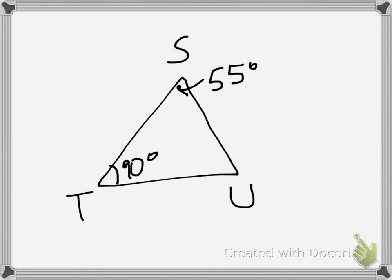And angle U is just going to be 90 plus 55 subtracted from 180, because all three angles have to add up to 180. So if you do 90 plus 55, that's 145. And when you subtract that from 180, you get that angle U is 35 degrees. So if I have a 90 degree angle, a 55 degree angle, and a 35 degree angle, that means that this triangle is a right triangle because of the 90 degree angle.